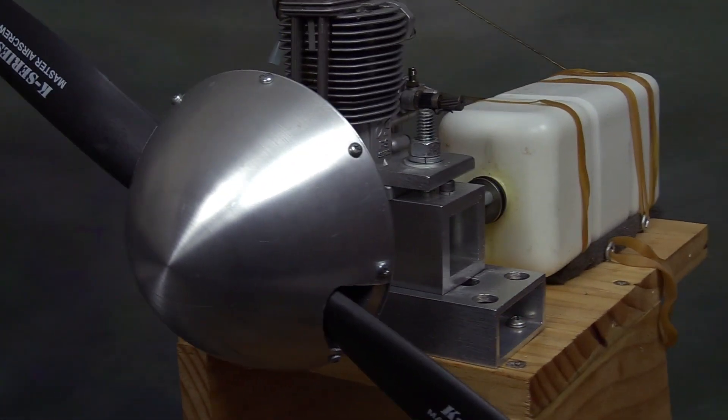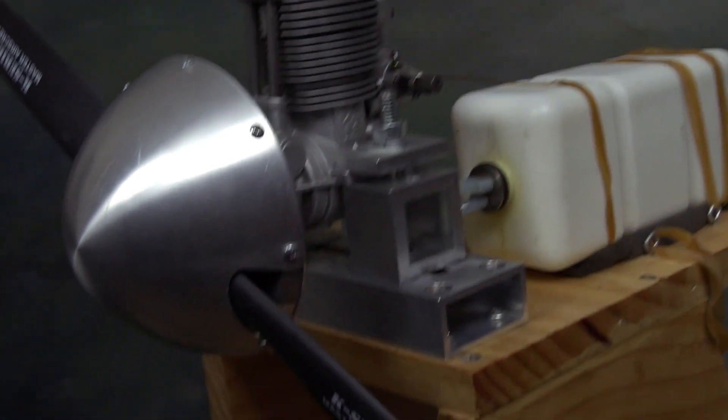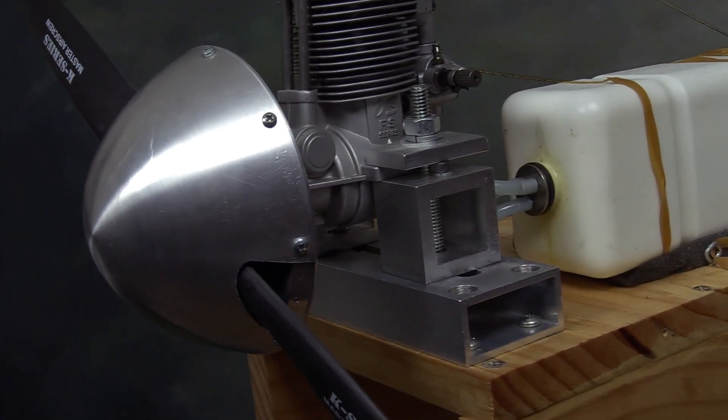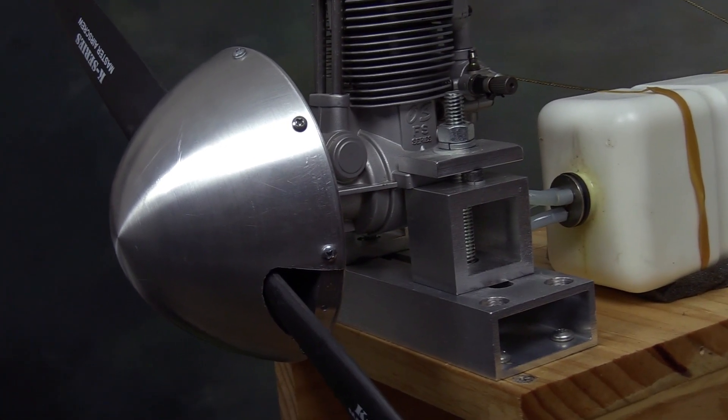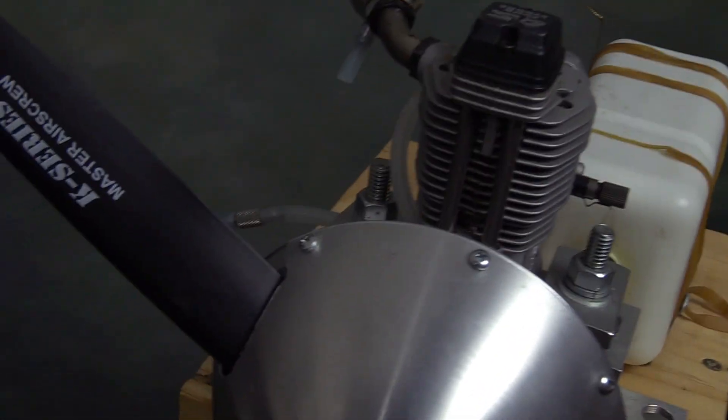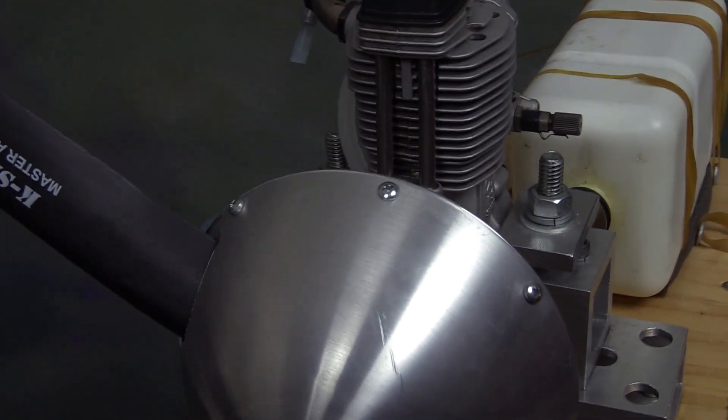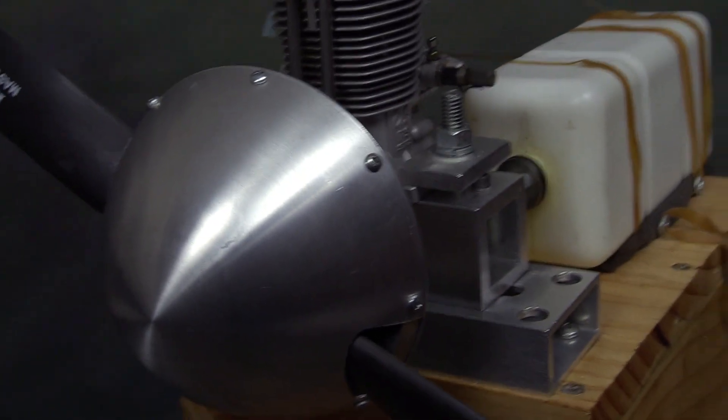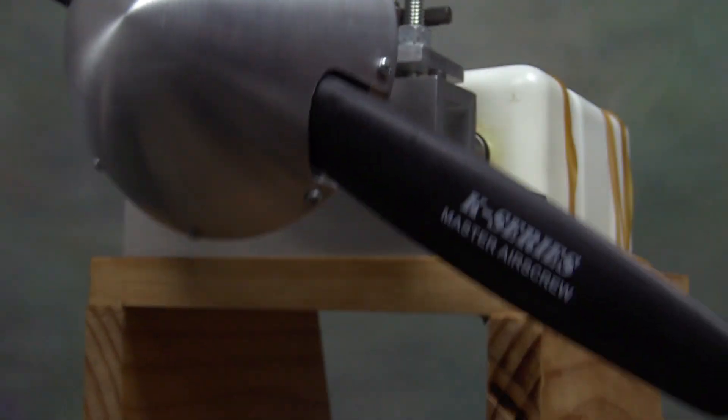I bought this aluminum spinner from Gene Barton a few years ago and let it sit in the bag, hesitant to work on it because I didn't want to damage it. In this video I want to explain the process and the steps I followed to cut out the prop doors and to drill the holes for the mounting screws.